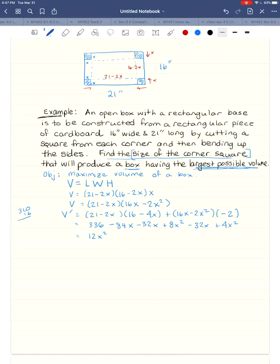Send the negative 2 through that second parenthesis, and we'll get a negative 32x plus 4x squared. So when I put this in descending order, I'm going to have a total of 12x squared. And then I've got a negative 84, negative 32, negative 32. So negative 84, negative 64, negative 148. And then I've got plus 336.